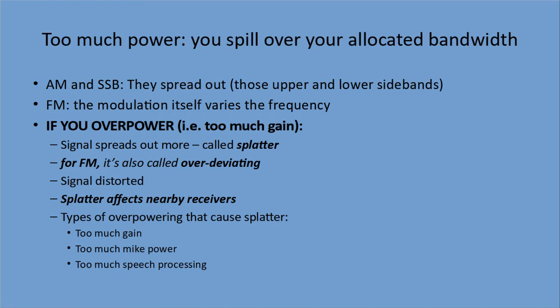So the types of overpowering that can cause splatter: too much gain, too much mic power — so you're yelling into your mic or holding it too close to your mouth, it can be as simple as that — and too much speech processing. That's on some of the more modern radios; they've got all kinds of things to help enhance the sound, but sometimes it doesn't work.